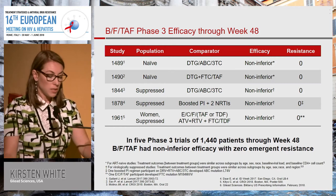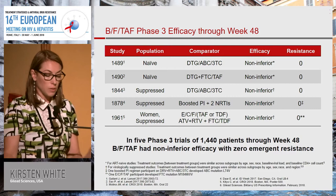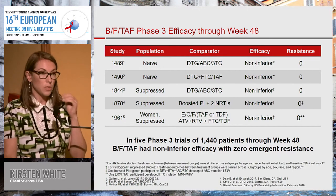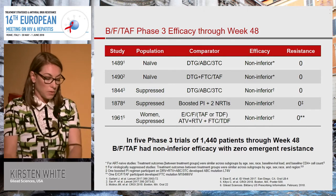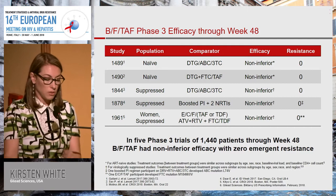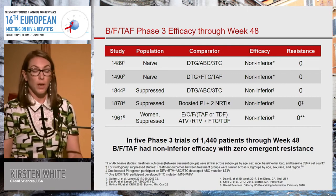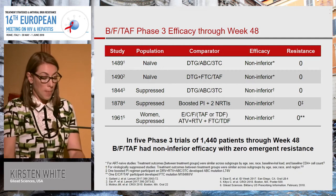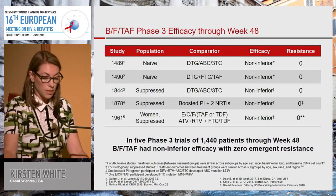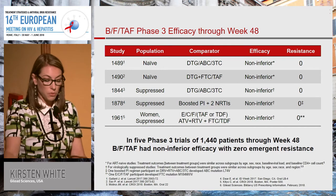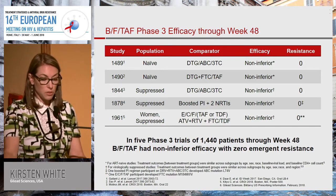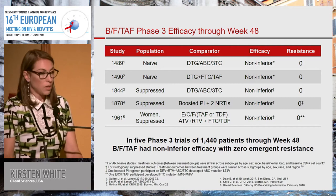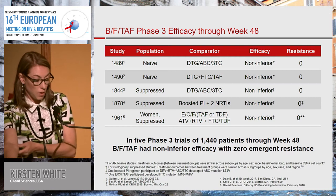The four phase three studies that led to approval: here we have the populations and comparators. The efficacy was non-inferior — Jonathan covered those numbers yesterday. There was no resistance development to BFTAF. One patient in a comparator arm had an emergent mutation. The fifth study, 1961, is a switch study in women only, with comparators of ECF/TAF or TDF and atazanavir boosted with Truvada — also non-inferior with no resistance to BFTAF. One patient on Genvoya had an emergent M184V. Very good resistance and efficacy for BFTAF so far with zero emergent resistance.